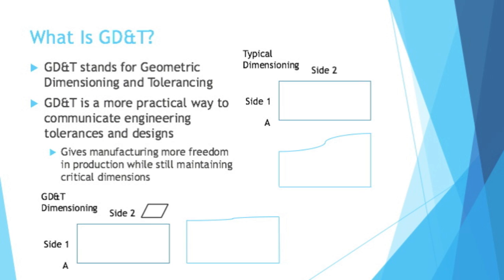This helps production as well, because instead of saying side 1 has to be 3 inches plus or minus 0.05, you give production that flexibility — it can be anywhere between 2.75 and 3.25, as long as they do not vary by more than 0.05. So they get to pick that initial area between 2.75 and 3.25, but then they have to stick with it more precisely.